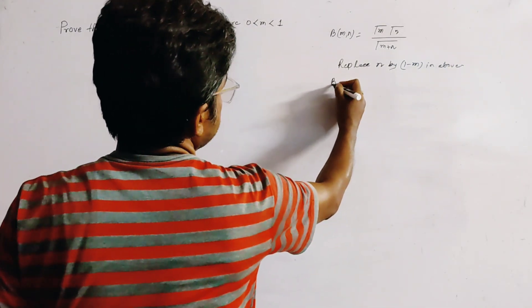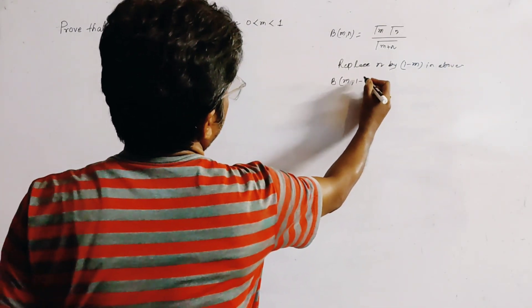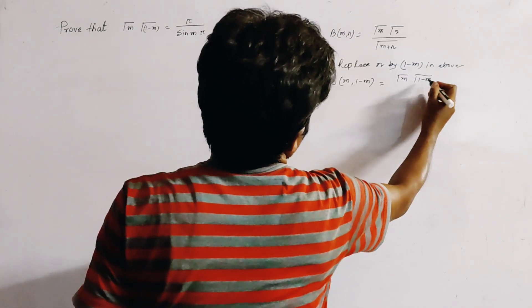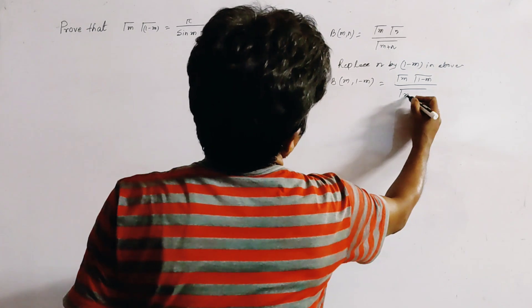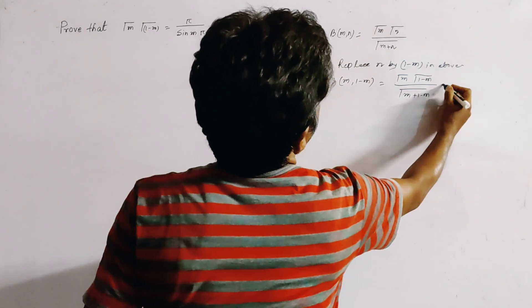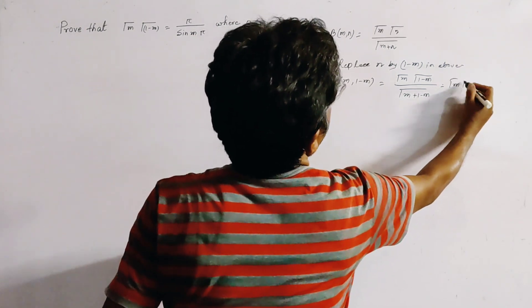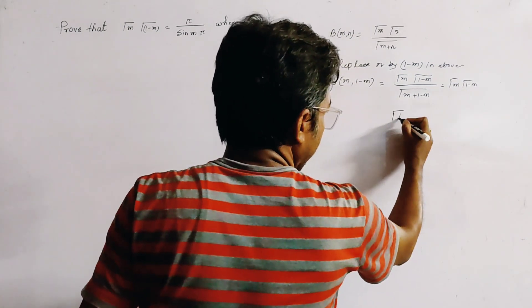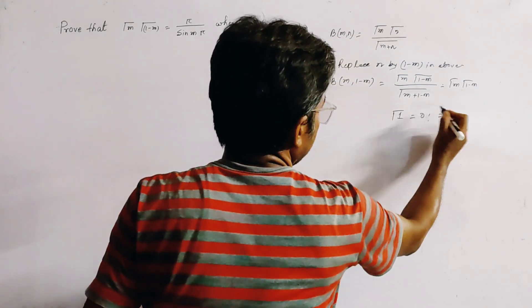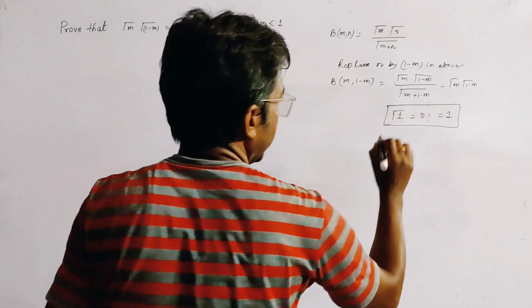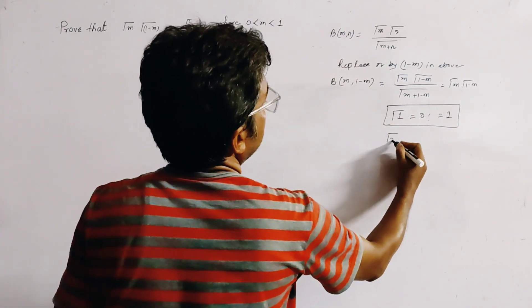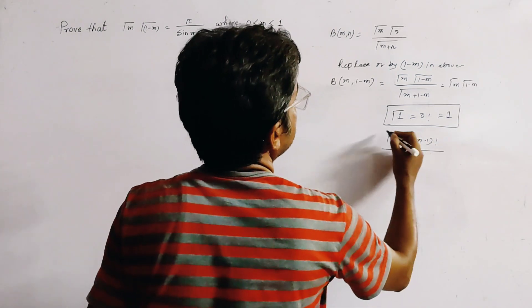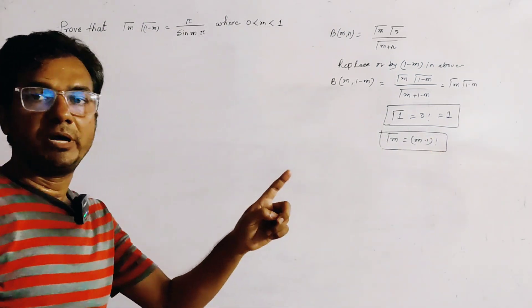We get β(m, 1-m) = Γ(m)·Γ(1-m) / Γ(m+1-m) = Γ(m)·Γ(1-m) / Γ(1). Since Γ(1) = 0! = 1, this simplifies to Γ(m)·Γ(1-m) = β(m, 1-m). We use the fact that Γ(n) = (n-1)! as an equivalent relation of the gamma function.